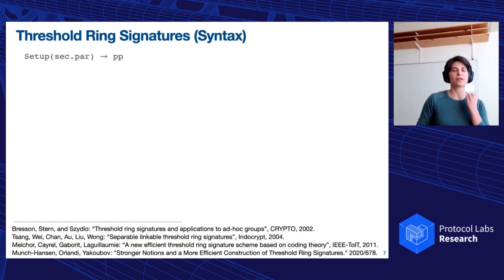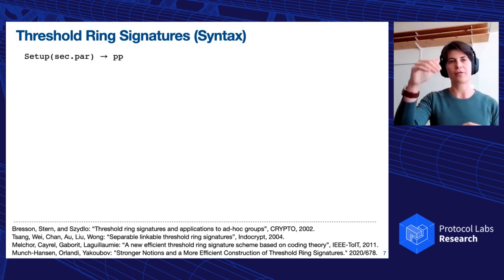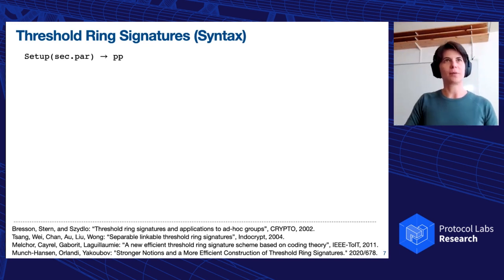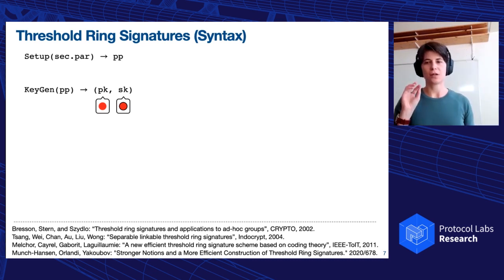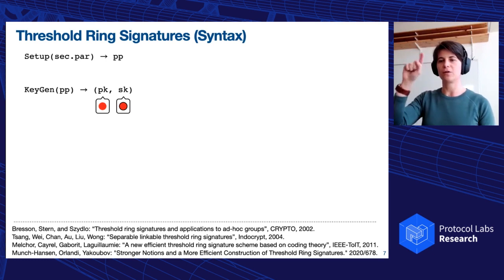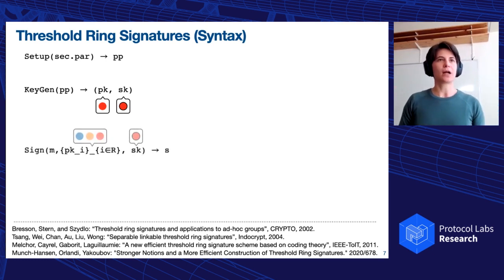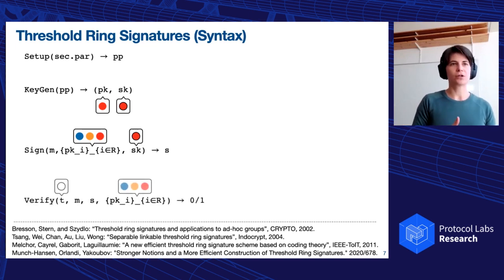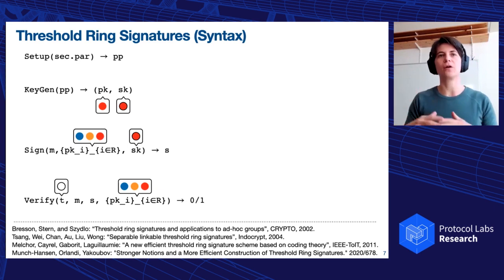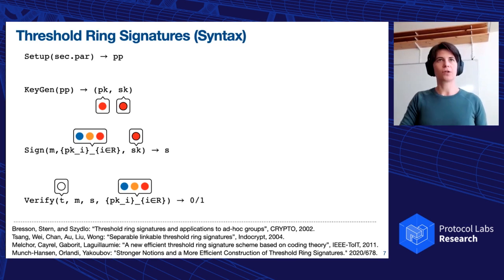So what I will show you in this presentation is basically the setting for the threshold ring signatures and the construction that we have from the discrete log assumption and signature of knowledge. Let's get started. So threshold ring signatures, they have been there for a while. In general, how do they work? We have the setup algorithm that takes as input the security parameter and outputs the public parameters. We have a key generation algorithm that takes the public parameters and outputs a public key and a secret key. Throughout this presentation, the public key is going to be always this circle and the secret key is going to be the circle with a ring around it. The signing algorithm takes as input a message, a ring of public keys, and one secret key, and produces a signature. And the verification algorithm takes as input a threshold, essentially counting how many signing keys have been used to produce this signature, a message, a signature, and a ring, and gives us 0 or 1 if there is at least a secret key that have been used to produce these signatures, and the secret key belongs to the ring R given in the verification algorithm.